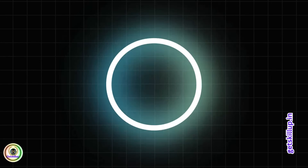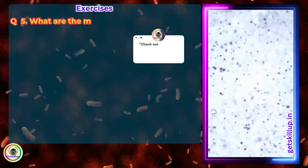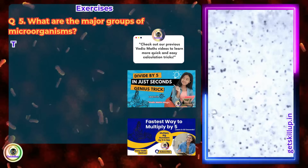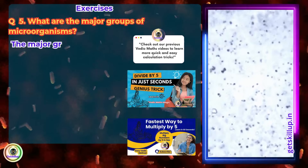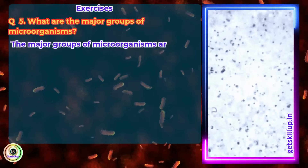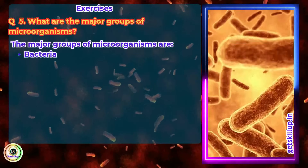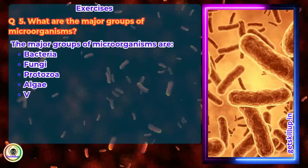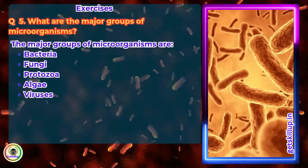Question 5. What are the major groups of microorganisms? Answer: The major groups of microorganisms are Bacteria, Fungi, Protozoa, Algae, and Viruses.